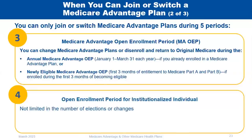Individuals who are institutionalized — such as those living in a nursing home — are not limited in the number of elections or changes they can make. They have additional flexibility to find the right Medicare Advantage plan based on their care needs.